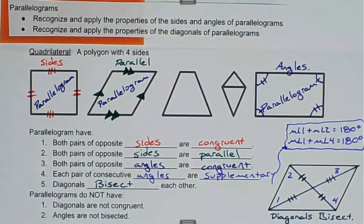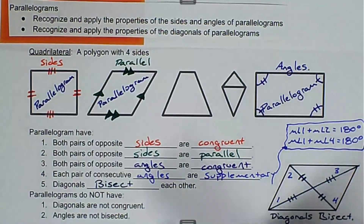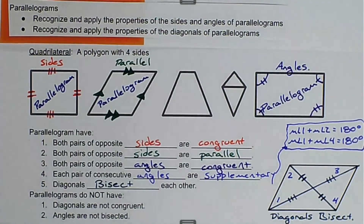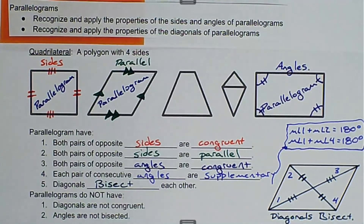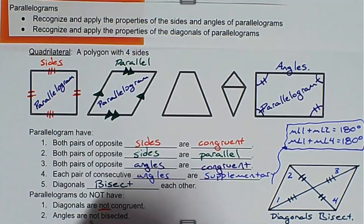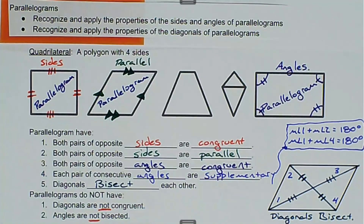Now, some things that parallelograms do not have. Diagonals are not congruent — we can see that we have a short diagonal and a longer diagonal. And angles are not bisected — this portion of the angle is not the same size as the other portion of the angle, so that angle is not bisected. Those are the things that parallelograms have, and those are the things that parallelograms do not have.